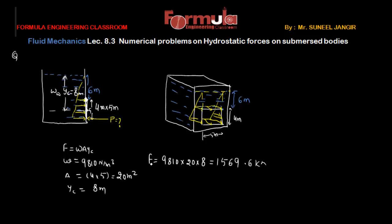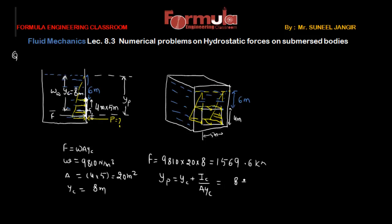The force acts at the center of pressure. The distance of the center of pressure from the free surface is yp. The formula is yp = yc + Ic/(A·yc), where Ic is the area moment of inertia of the gate about its centroidal x-axis. Here yc = 8 meters.